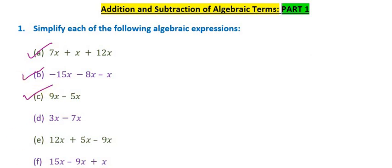Alright, so part C we have 9x minus 5x. 9 minus 5 is 4, so that's 4x.